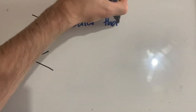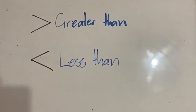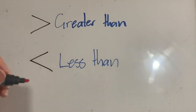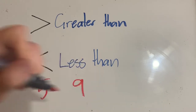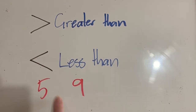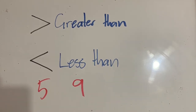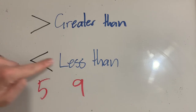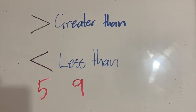When we're talking about the size of numbers we might come across these signs — these are greater than and less than signs. If we have two numbers, for example five and nine, we might be asked to put a sign in between them that makes a true statement. Five is smaller than nine so we would use a less than symbol, because the number on the left is smaller than the number on the right.